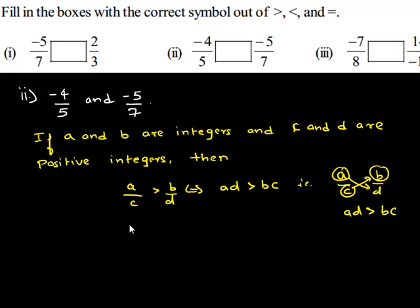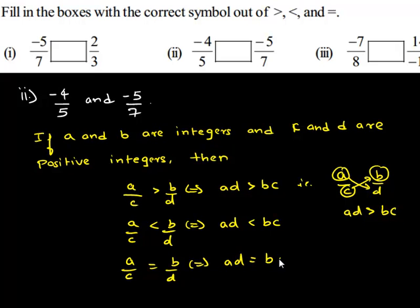Also we have A upon C is less than B upon D if and only if product AD is less than BC, and A upon C is equal to B upon D if and only if AD is equal to BC.